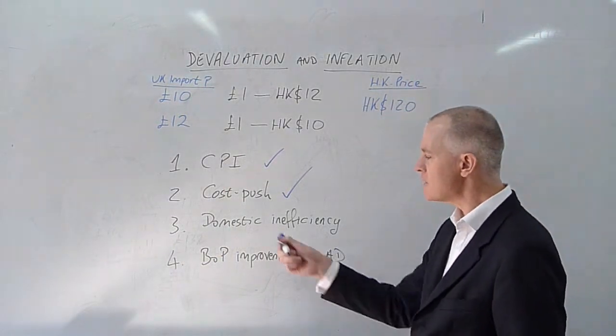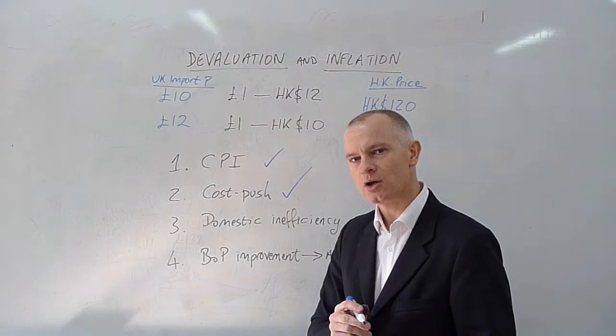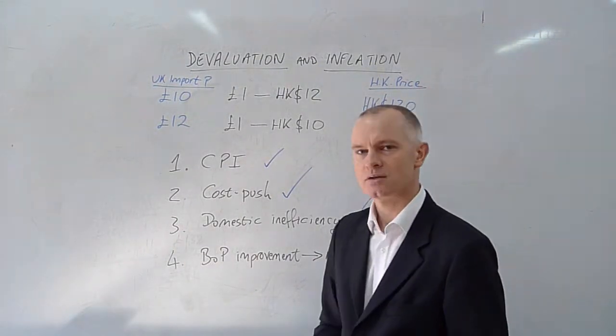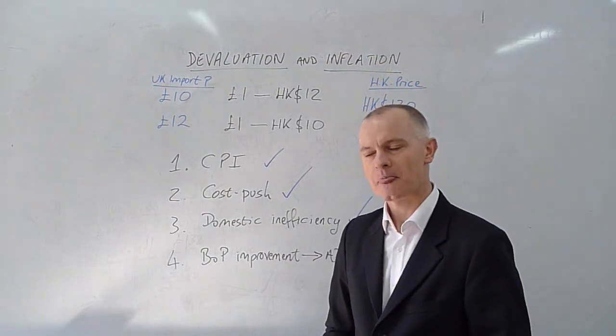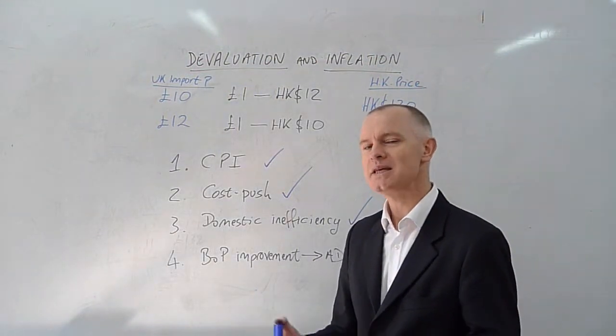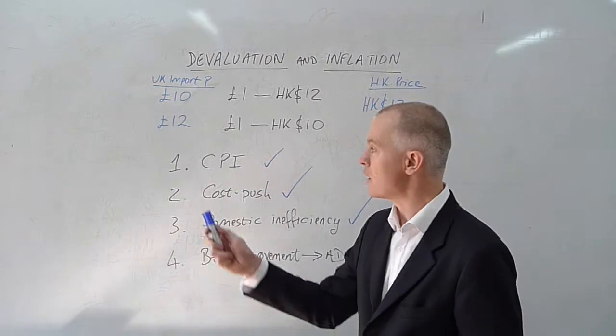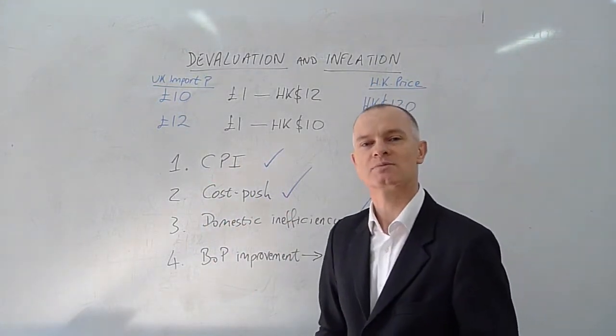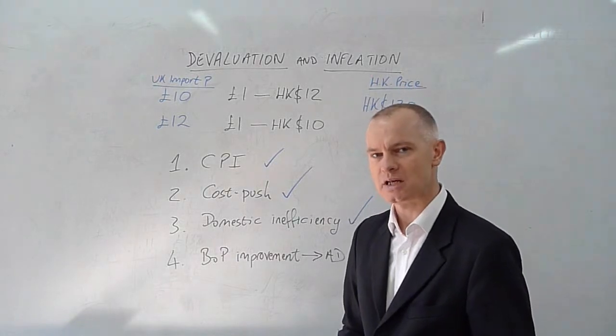A domestic manufacturer importing no raw materials will still see the risk of inefficiency, because he will be competing against products which are imported and now expensive, or domestically produced and now expensive because of their imported inputs.